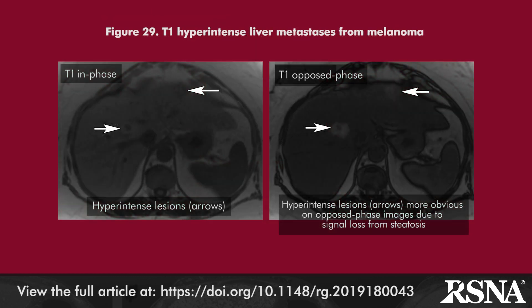Finally, hepatic metastases from melanoma can be seen as hyperintense T1 lesions that maintain high signal on opposed-phase images.